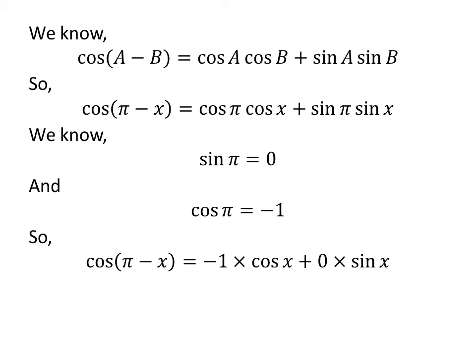Let us replace the value of sine of pi and cosine of pi in the above expression of cosine of pi minus x. So, we got cosine of pi minus x is equal to minus 1 times cosine of x plus 0 times sine of x. As minus 1 times cosine of x is equal to minus cosine of x, and 0 times sine of x is equal to 0.